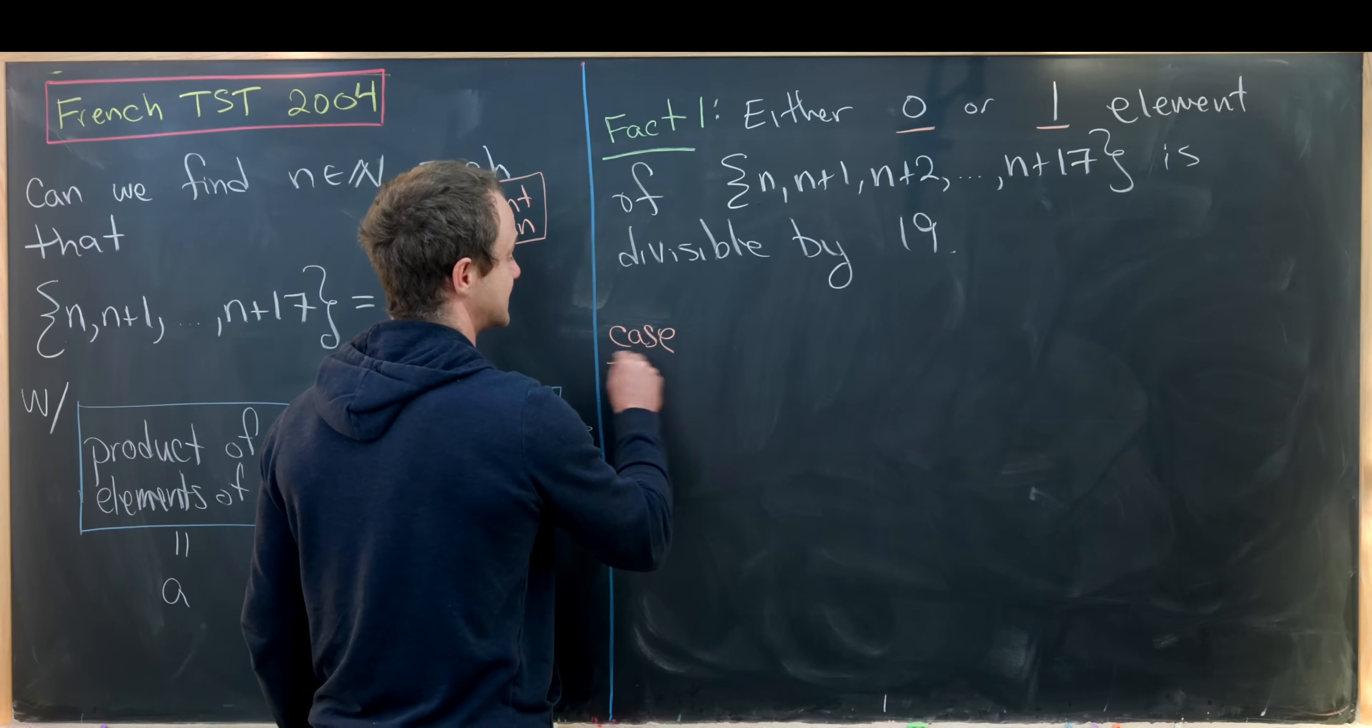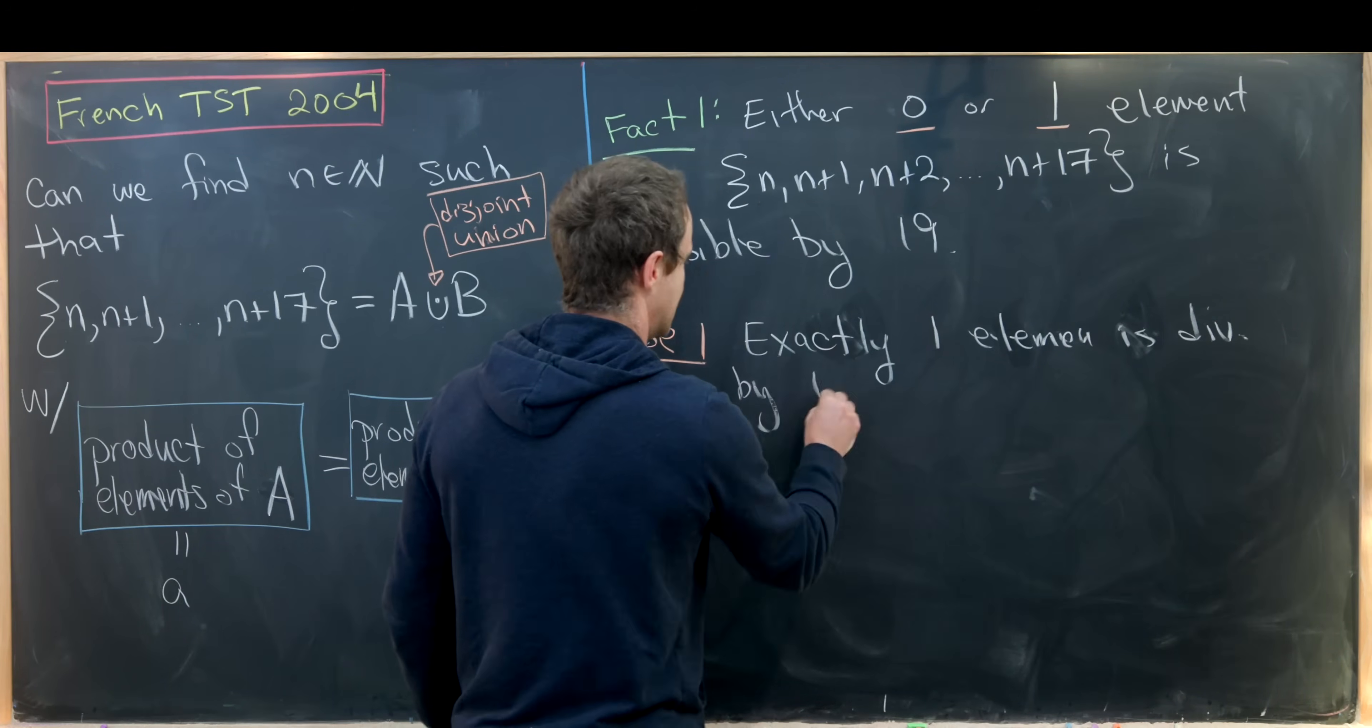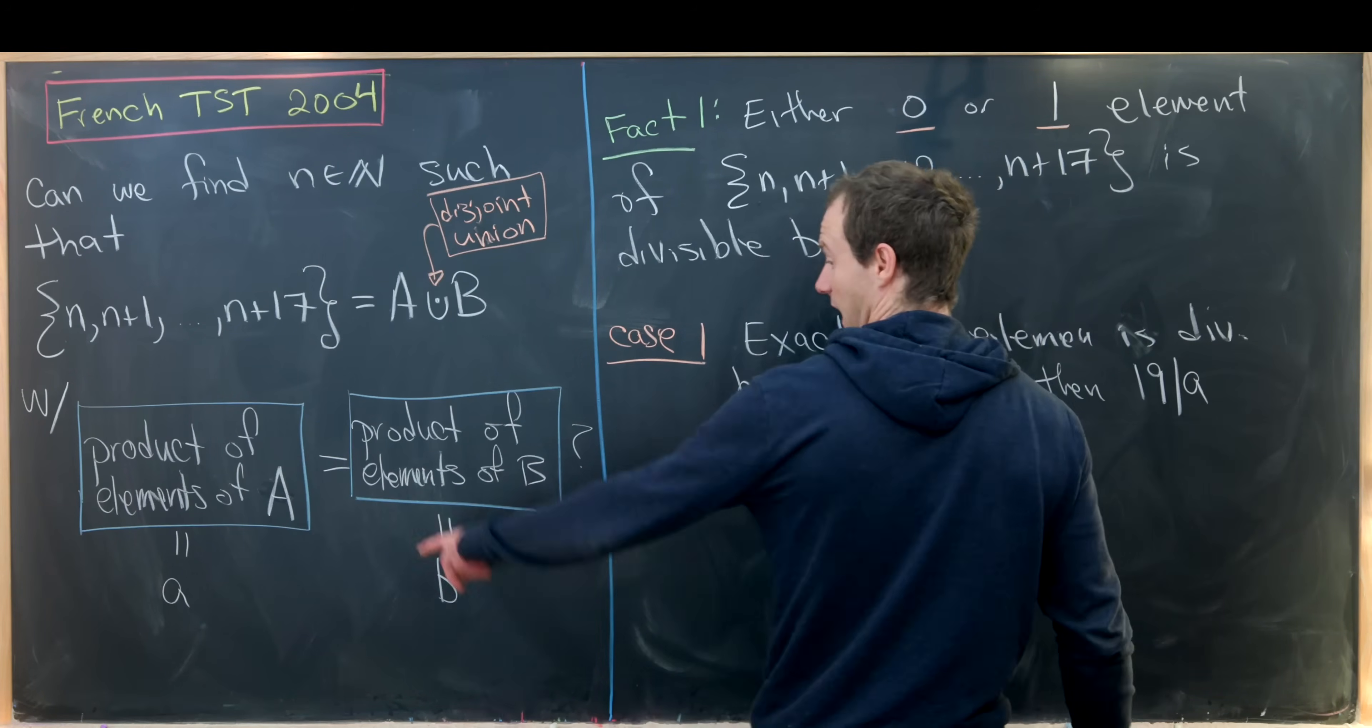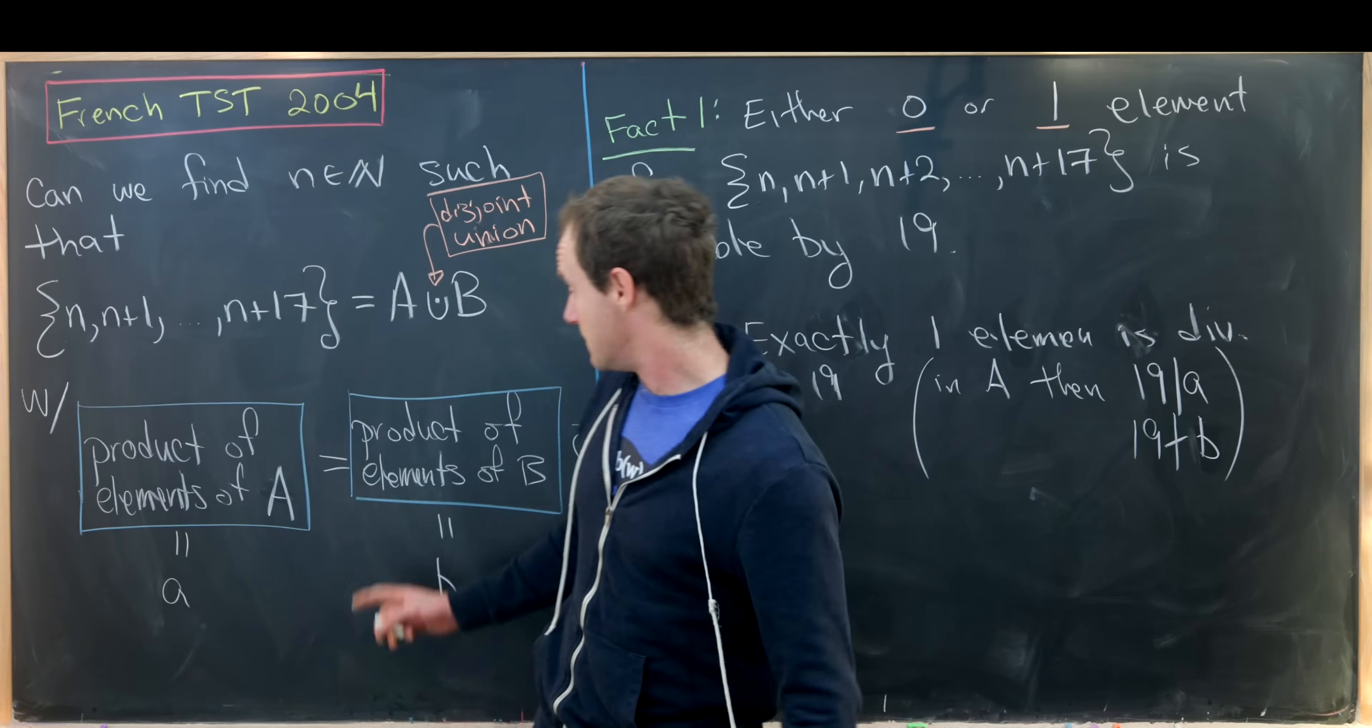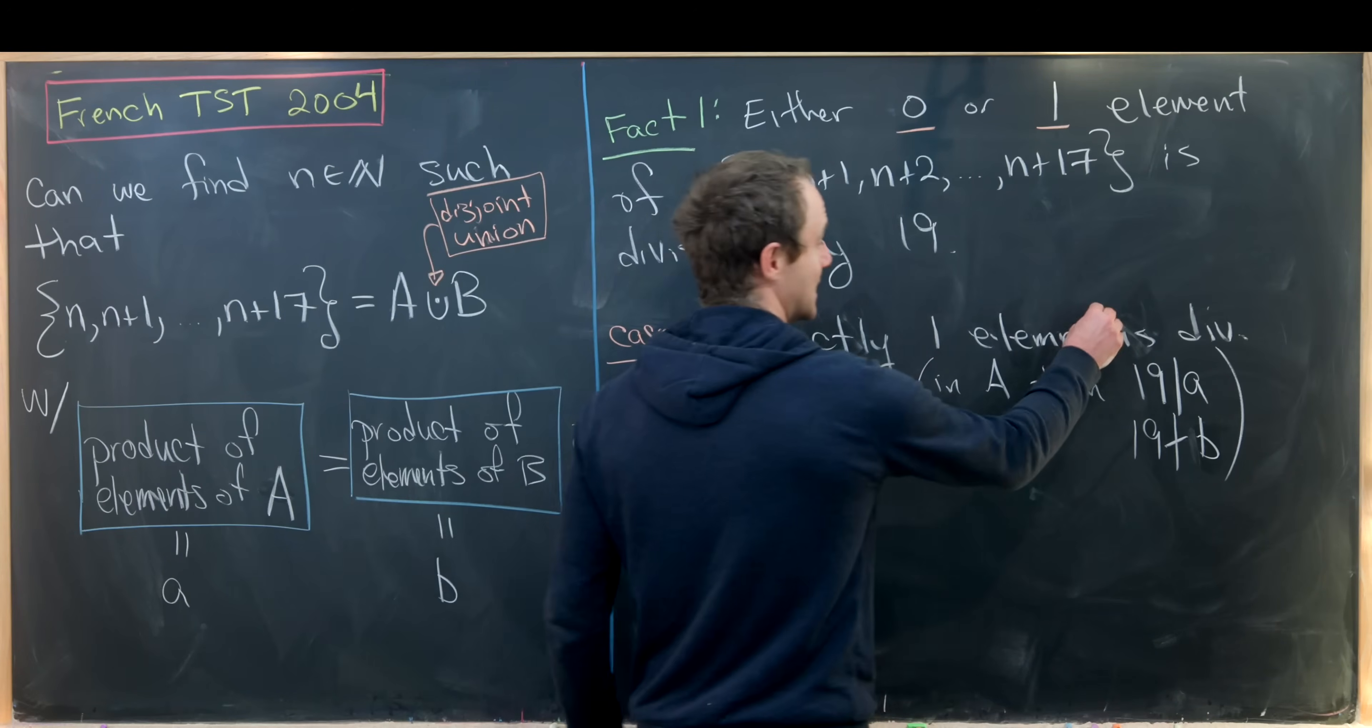Case one: exactly one element is divisible by 19. But now we see that's a problem. If that element is in A, then we see that 19 divides little a using our notation over there, but 19 does not divide little b. And that's because 19 is a prime, and b is built out of things that are all not divisible by 19. But if 19 divides a and not b, then a cannot be equal to b. We've got a similar subcase if our element is actually in capital B instead.